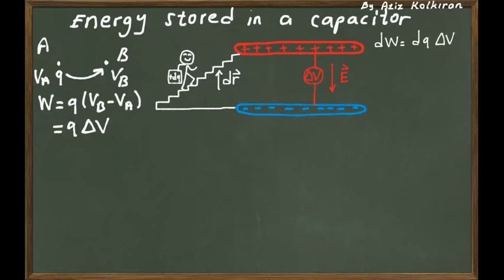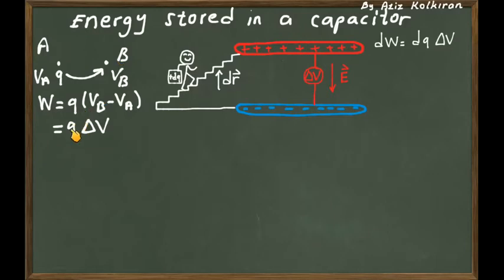Let's think about how much work you have to do to move a charge dq from the lower plate to the upper plate. If the plates already have a potential difference ΔV, then to move an extra charge dq from one plate to the other, you consume a work of dW = dq · ΔV. This is because moving a charge across a potential difference requires work equal to the charge times the potential difference.